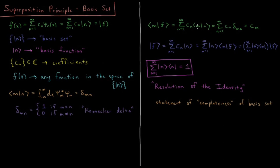The overlap integrals of our basis functions equal the Kronecker delta. Substituting that in, this value is 0 at every value of n except where m equals n, where it equals 1. So the sum gives us the value c_m. The overlap of a basis function with our function f gives us the coefficient of that basis function in the expansion of f.